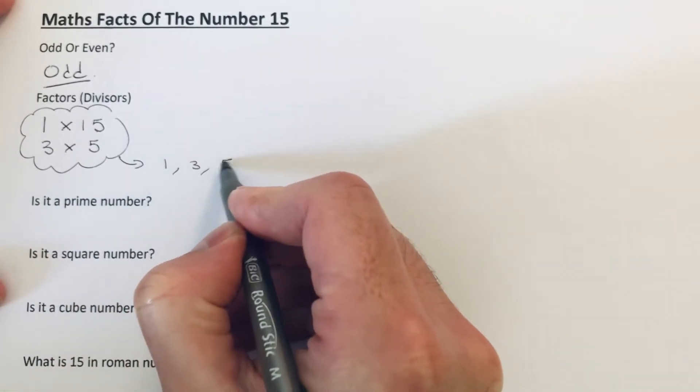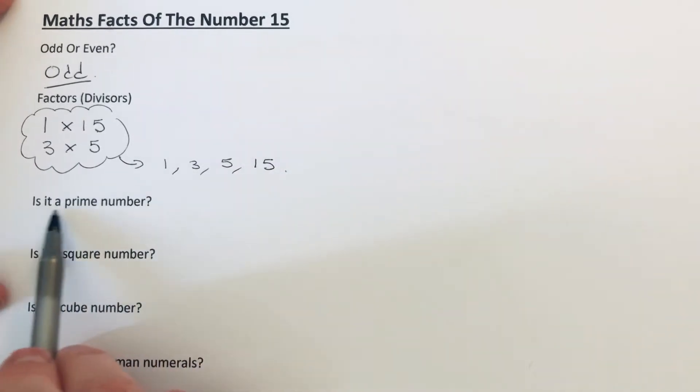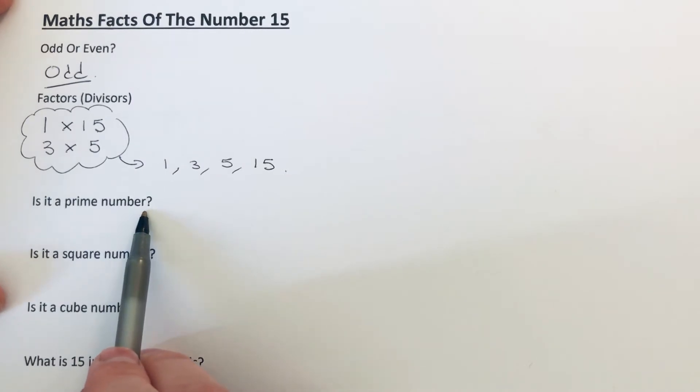Our next question: is 15 a prime number? A prime only has two factors, one and itself. This has four factors, so the answer to this question is no.